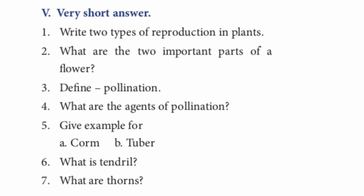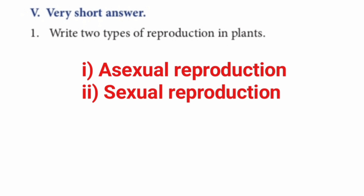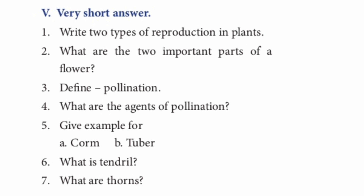Roman numeral V: Answer very briefly. Question 1: Write two types of reproduction in plants. 1. Asexual reproduction. 2. Sexual reproduction.